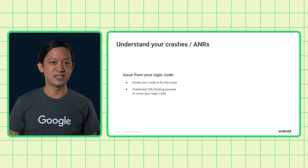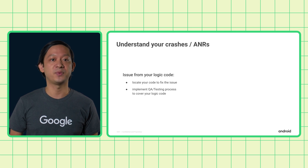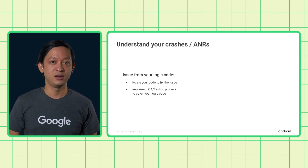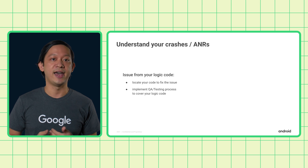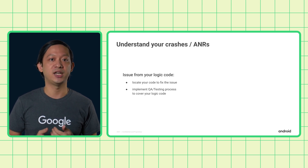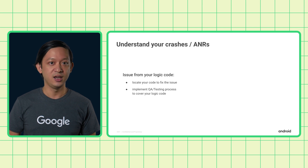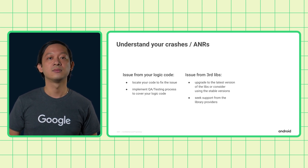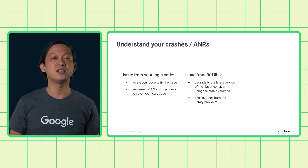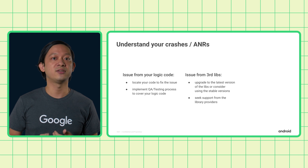You can use the same device model and OS to try to reproduce the issue if possible. Furthermore, you should work with your team to implement QA and testing processes to cover your code for each feature and avoid future issues. We have another video sharing about QA and testing processes — you can follow our video description for more details. In the situation where the issues come from third-party libraries you are using, we suggest that you upgrade to the latest version or revert to the last stable version, depending on which version you are currently using.